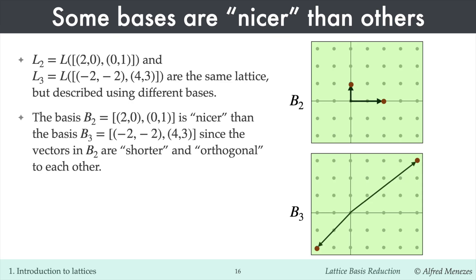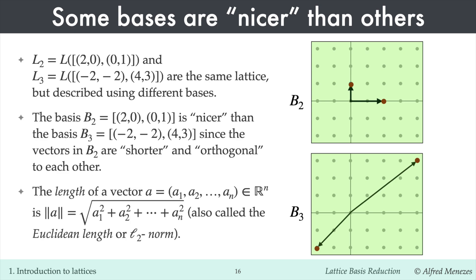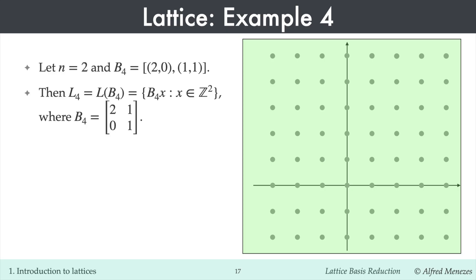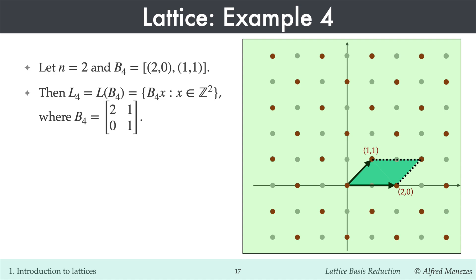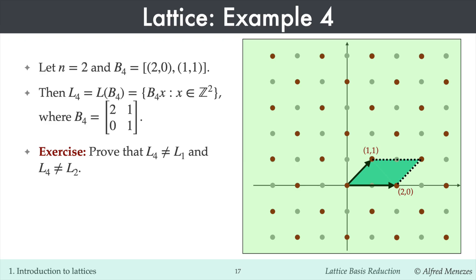The basis B2 is nicer than basis B3, since its vectors are shorter and orthogonal to each other. By a short vector, I mean one with small Euclidean length — that is, small L2 norm. Here is a fourth example of a two-dimensional lattice L4 with its basis vectors. The fundamental parallelepiped of L4 is the green parallelogram shown in the figure. Repeating the shape at each lattice point yields the tiling of the plane whose corners are the elements of L4. As exercises: show that L4 is not equal to L1 nor L2, and show that a second basis for L4 has shorter, orthogonal vectors.